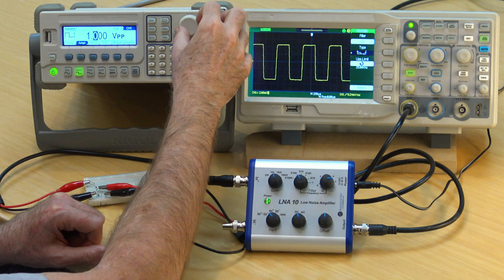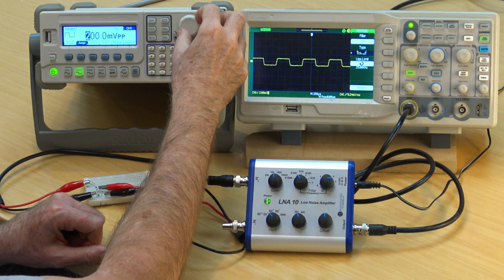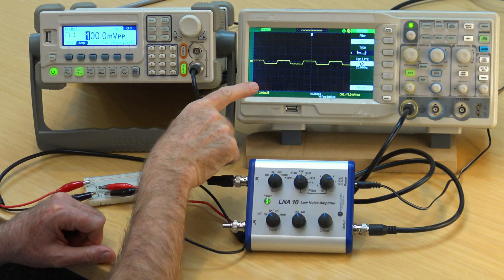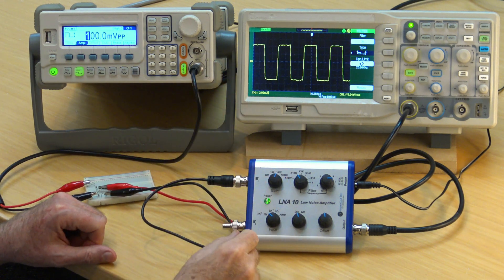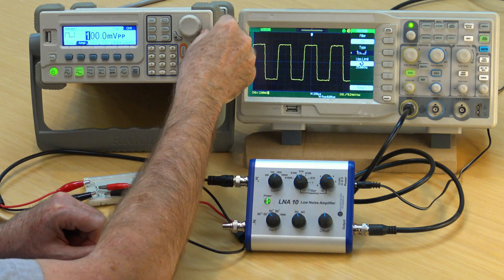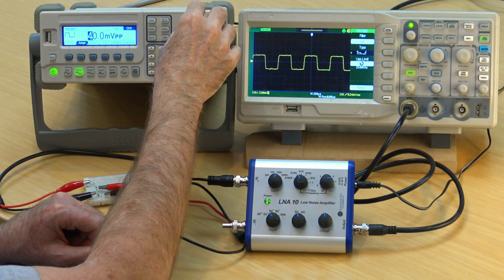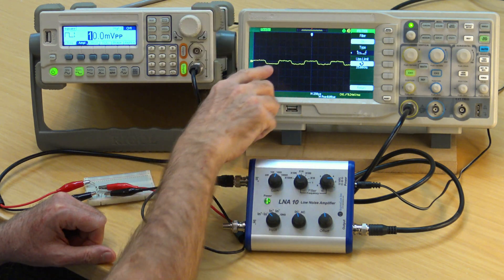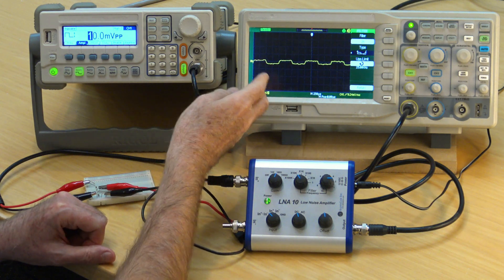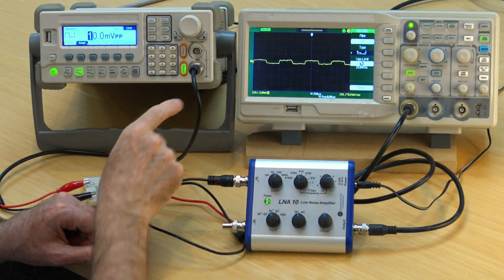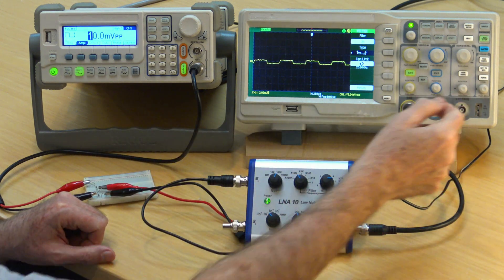Now I can even turn down the signal by a factor of 10 to 100 microvolts peak to peak and increase the gain to 100x. Further reducing the signal down to 10 microvolts peak to peak, we see a cleaner signal at 10 microvolts with the differential probe than the one millivolt signal that was directly connected to the oscilloscope.